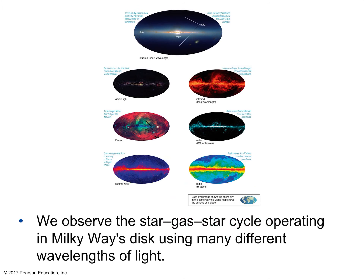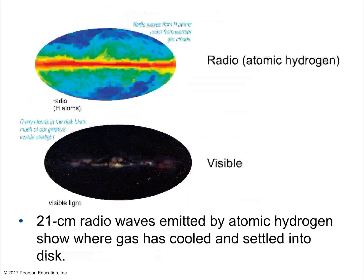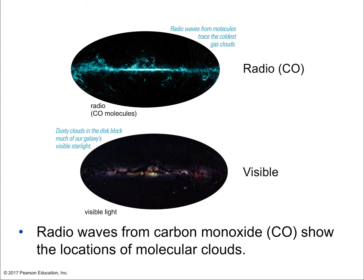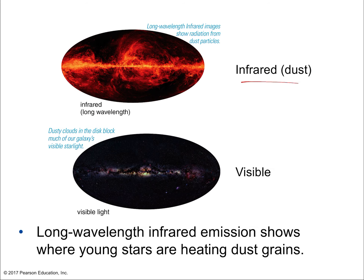We observe the star-gas cycle operating in the Milky Way's disk using many different wavelengths of light. Looking at radio waves, the 21 centimeter line is emitted by atomic hydrogen — those are long microwaves, longer than the microwaves used in your oven. In the visible spectrum, there are large dark spots wherever there's a molecular cloud completely blocking out visible light. In the radio spectrum, carbon monoxide from cooling molecular clouds emits at a different and longer wavelength, showing the location of those molecular clouds.